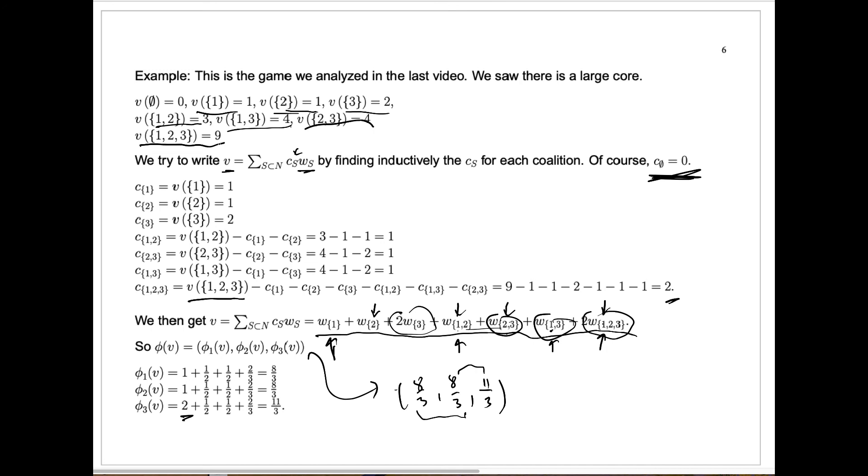But again, let me remind you, there are many games that don't even have a core, where the core is empty, I should say. Or there are games which have a non-empty core, and the Shapley value does not necessarily have to even be in that core. There's an example in one of the problems of the exercises that shows you this. So this is in some sense independent of the idea of core, but both ideas are trying to get at the same thing: what constitutes a fair payoff for the different players in a game.